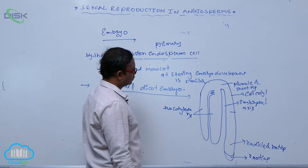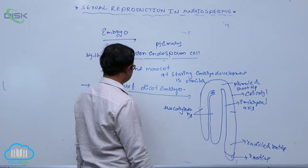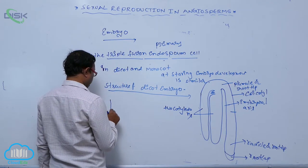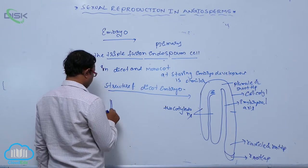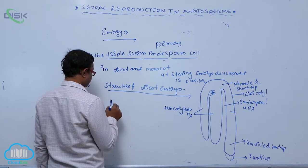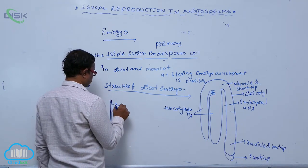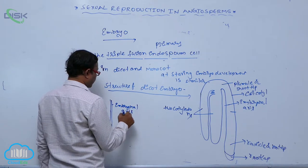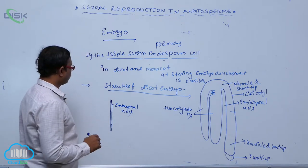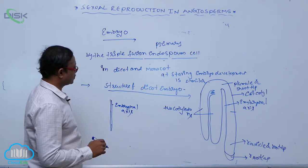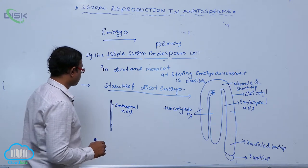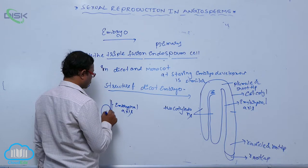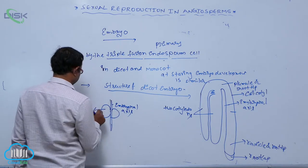This is the structure of an embryo. Imagine the diagram. For example, the embryonal axis — the embryo has an axis that is known as the embryonal axis. In that embryonal axis, two cotyledons are attached, so these are the two cotyledons.